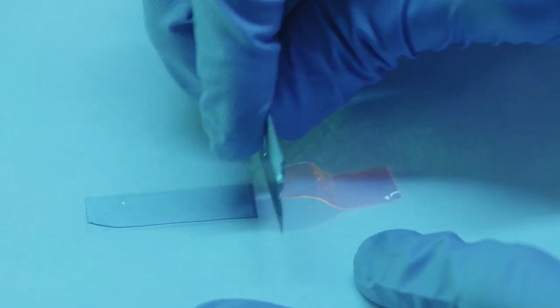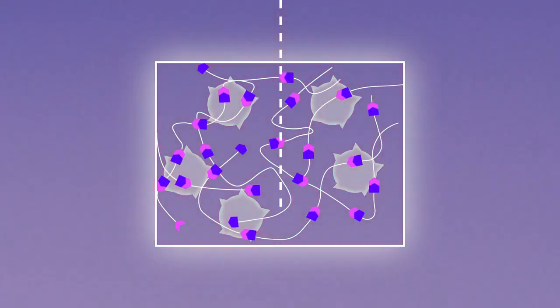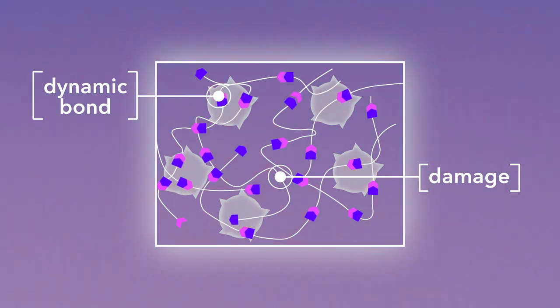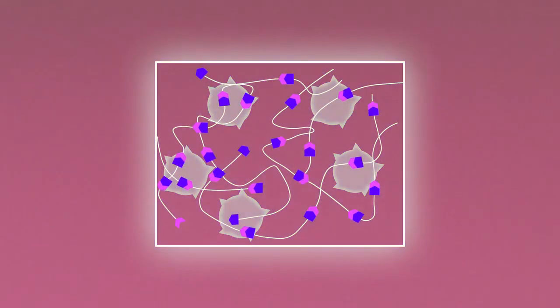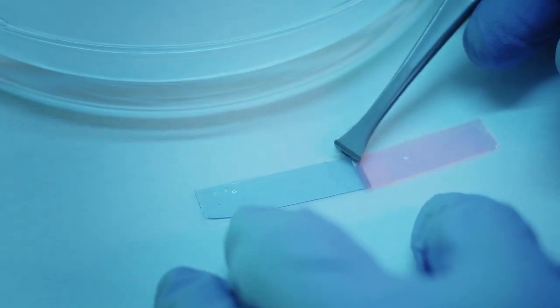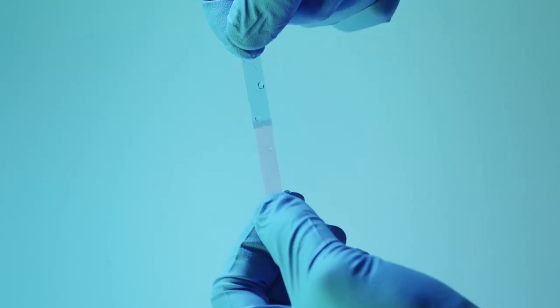But then if we stretch it too much, there are cracks forming. These hydrogen bonding, they can reform even at room temperature. Then these polymers will be able to self-repair when the bonds are broken.